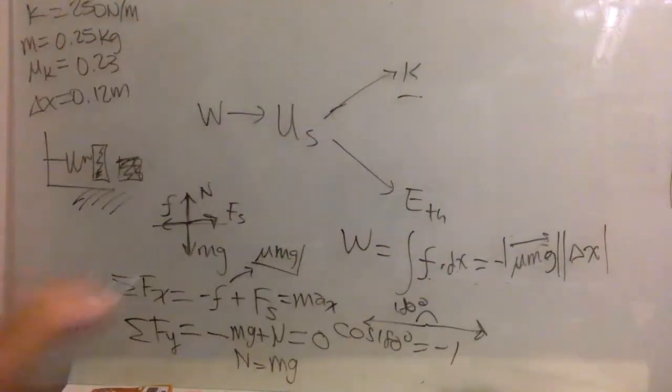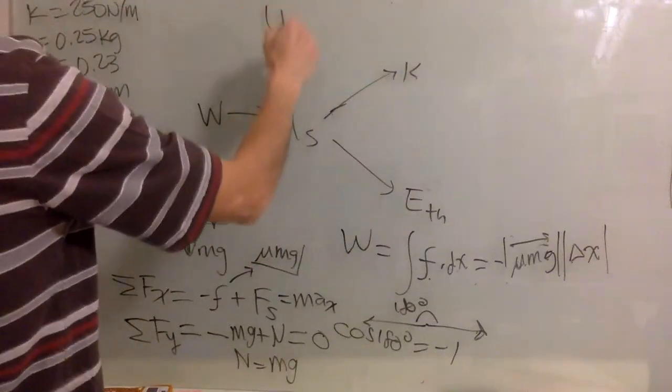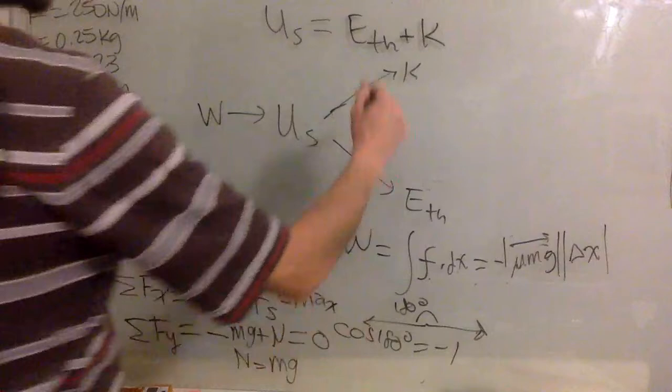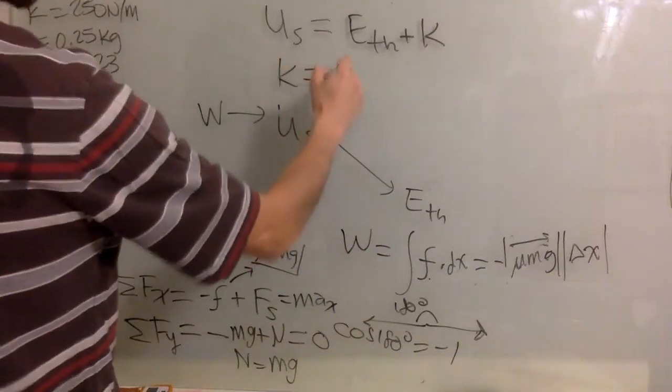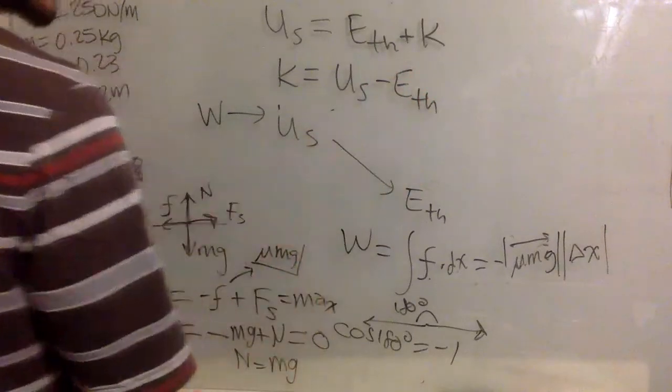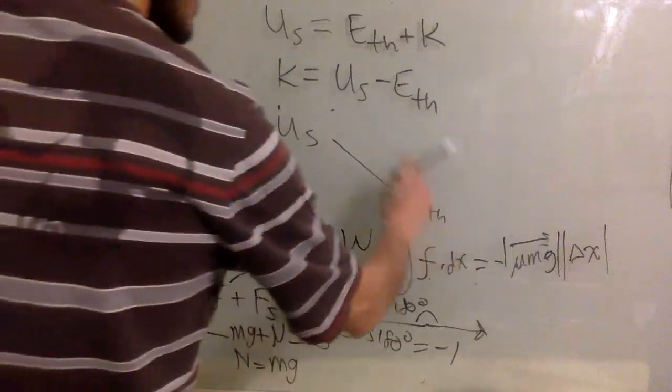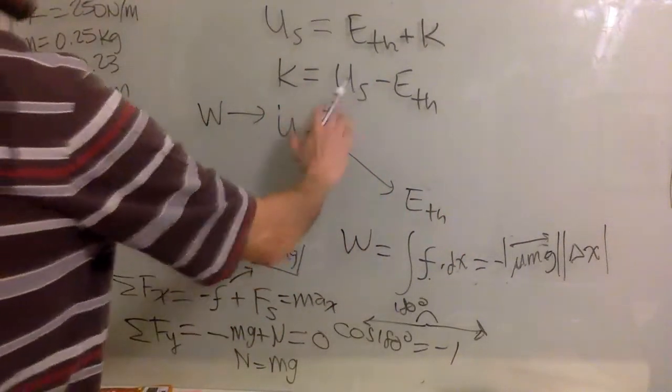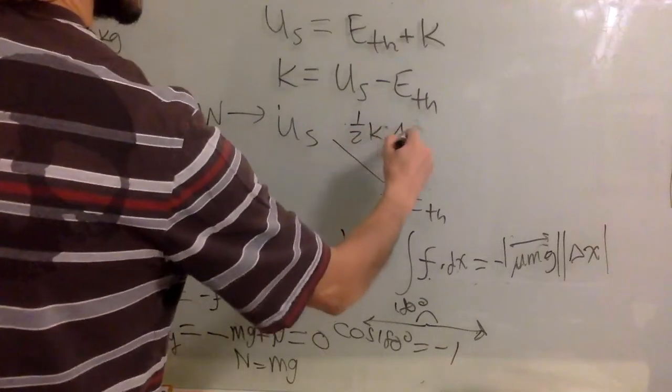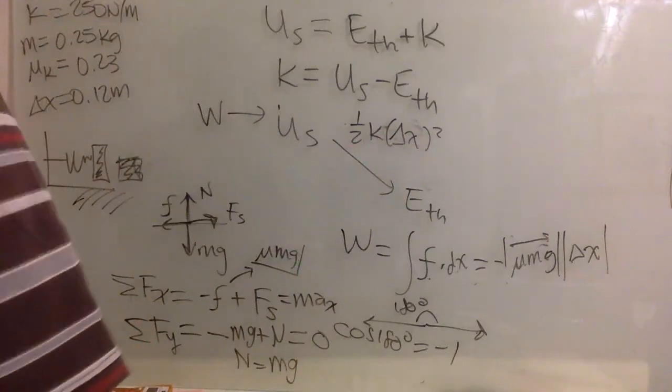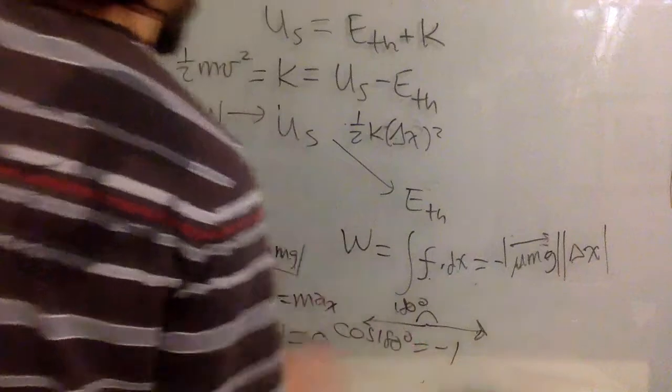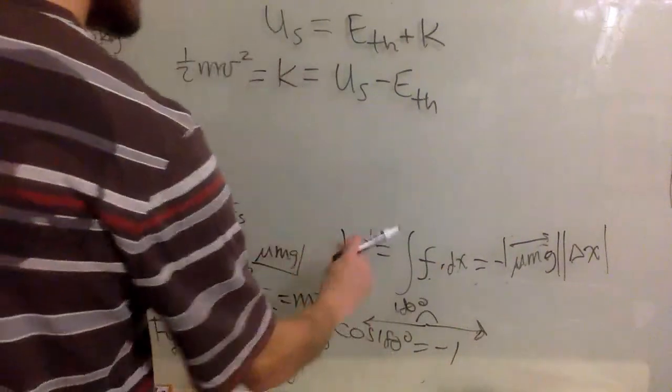So what is K, the kinetic energy? Well, if this spring potential energy goes into thermal energy and kinetic energy, it means that kinetic energy is energy of the spring, potential energy in the spring minus the thermal energy. And we know that the potential energy in the spring is going to be one half of K X squared, delta X squared, right? So we can get K is going to be one half of M V squared. We have everything we need, great.